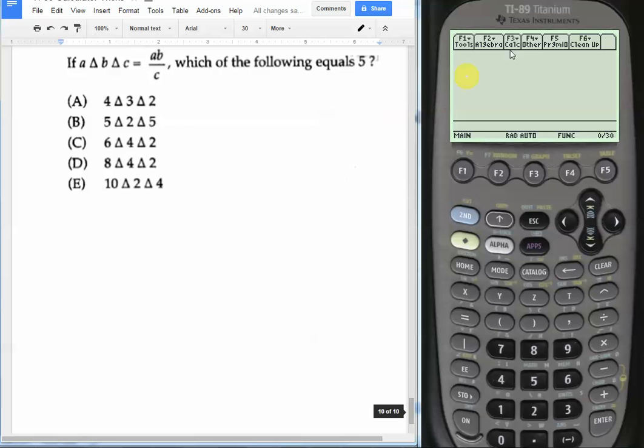We are going to define the function. We're going to click F4, which is under the other category, and then the first choice is define. Instead of the letters A, B, and C, which we could use for simplicity, I'm just going to use X, Y, and Z. So we're going to define a function F of X, Y, and Z.